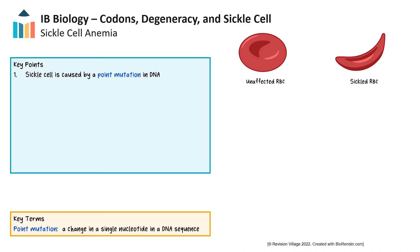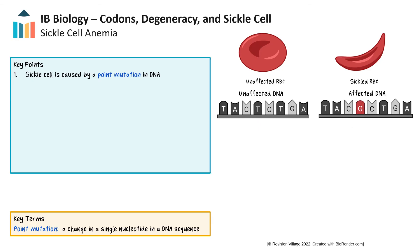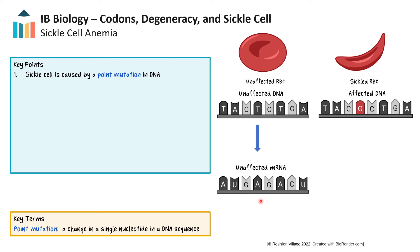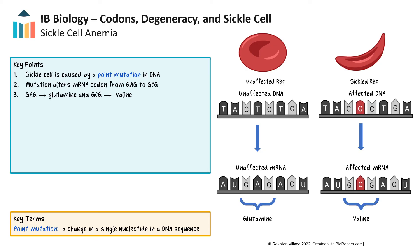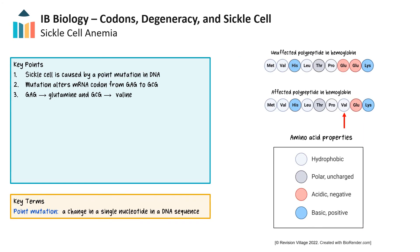The mutation that causes sickle cell is a point mutation where a single nucleotide base in DNA has been switched for another. The unaffected sequence for hemoglobin in DNA is CTC. However, in sickle cell, it's changed to CAC. This leads to messenger RNA changing from GAG to GUG. The change in the messenger RNA codons causes a change in the amino acids, as GAG codes for glutamic acid while GUG codes for valine. Valine is a hydrophobic, neutral amino acid, while glutamic acid is an acidic, negatively charged amino acid. The substitution of a negatively charged glutamic acid with a neutral valine removes the charge, therefore altering the 3D shape of hemoglobin.